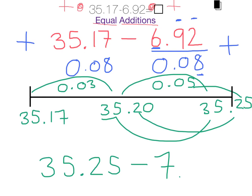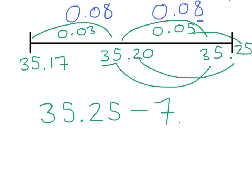Right, now all I have to do is 35.25 take away 7. And because 7 has got nothing in the decimal places, I just have to go 35 subtract 7, which will give me 28.25. And that's my answer.